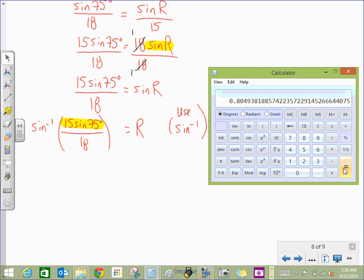So that is not yet the value. We still need to apply the inverse. So let's apply this as a final step. So I'm using my second function, my shift, my inverse key. I'm going to invert that, and I get about 53.6 degrees. So 53.6 is approximately the value of R.